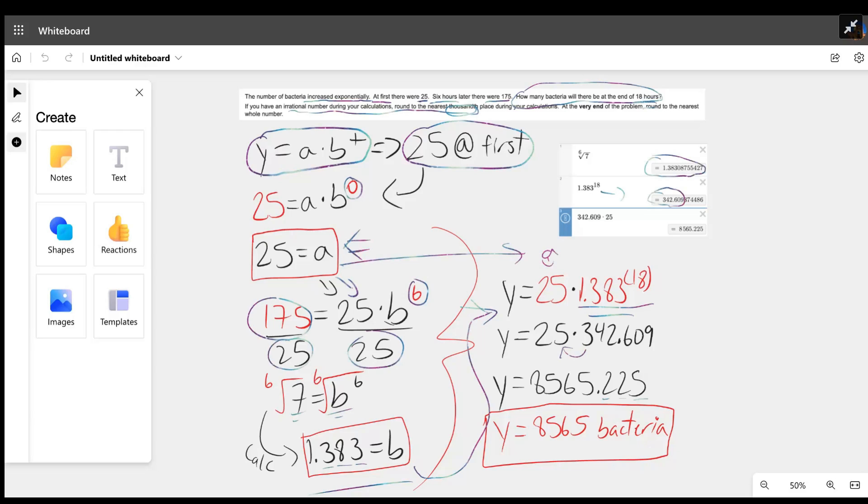That's not the end just yet. At the very end, which they bolded out for us, it says round to the nearest whole number. Since we want the whole number, our final answer would be 8565 bacteria.